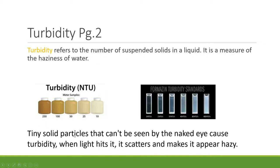Turbidity is made up of tiny particles that you can't see with the naked eye. The science behind most analyzers involves some form of light — when light hits these particles, it scatters and makes the fluid appear hazy. We can detect that scattered light with optical detectors. Examples range from very turbid water to nearly clear water, and this is why we measure for turbidity.